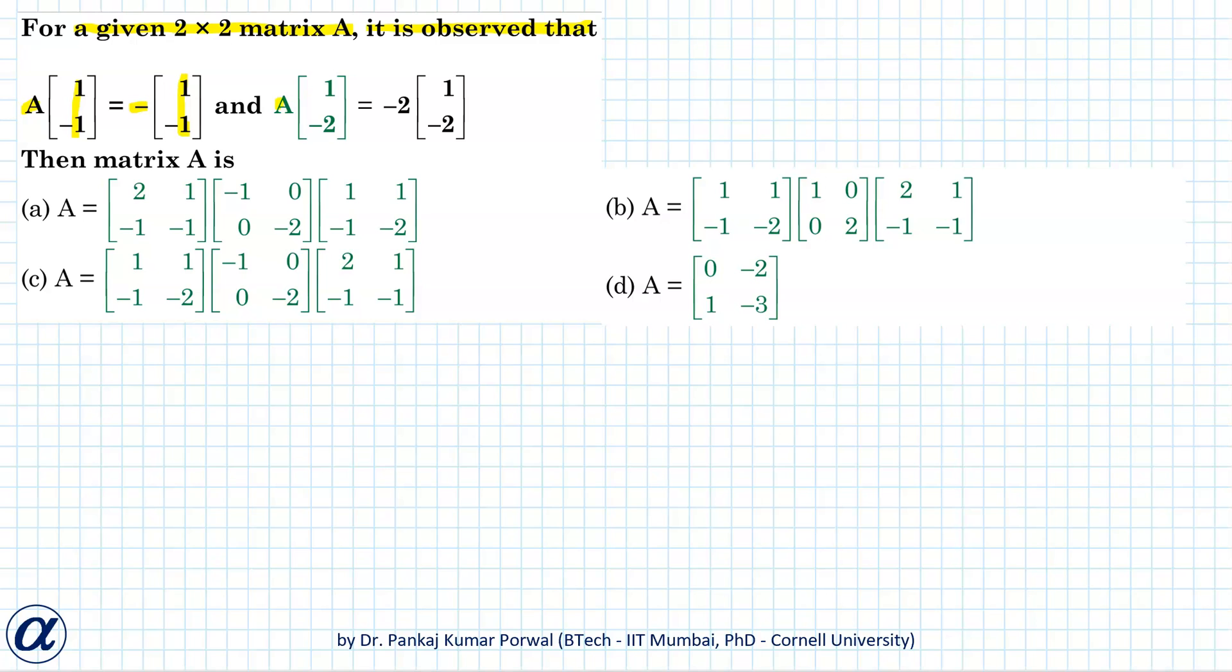And when we multiply the matrix A with vector [1, -2] then we get -2 into the same vector [1, -2]. If there are vectors like these two that satisfy this property, then these are the eigenvectors of matrix A.